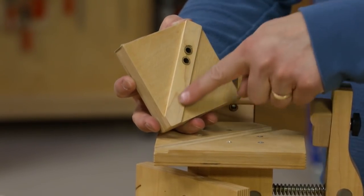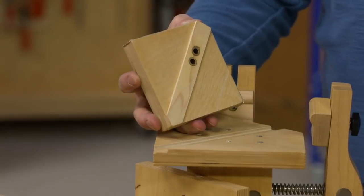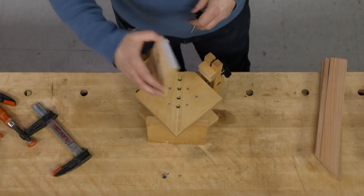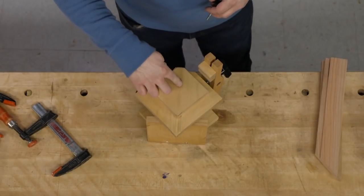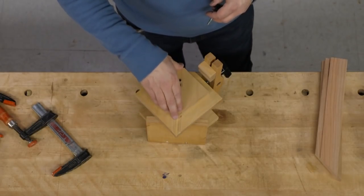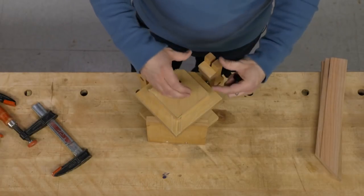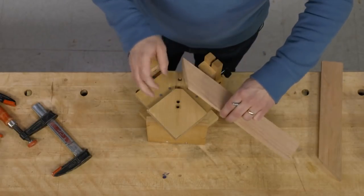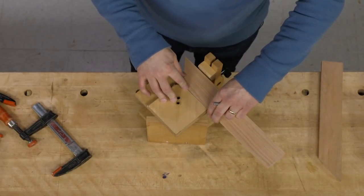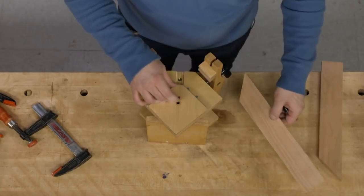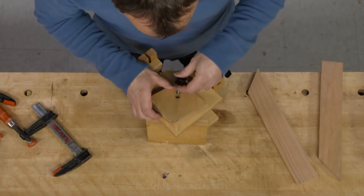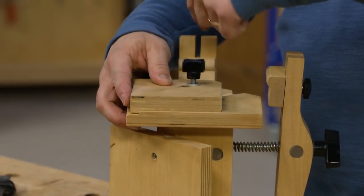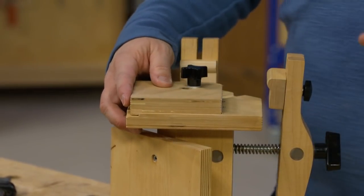That way with these threaded inserts installed in the top, you can position this block basically anywhere along this length to match the width of the pieces that you're working with. So I have some mitered frame pieces here, a little over two inches, so I can just find the hole set that's going to work for me, line it up, and lock it down.